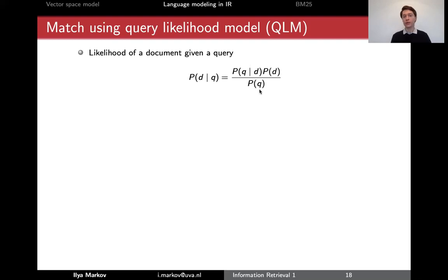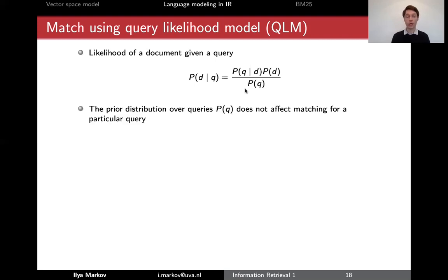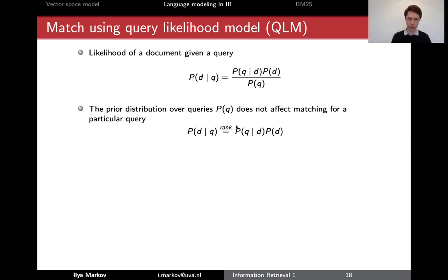We notice that in the denominator we have the probability of a query. If we have a query 'University of Amsterdam' and rank many documents for this query, the query is the same for all documents — its probability doesn't affect ranking at all. So we can simply drop it, and this is how we write it. We say it's rank equivalent.